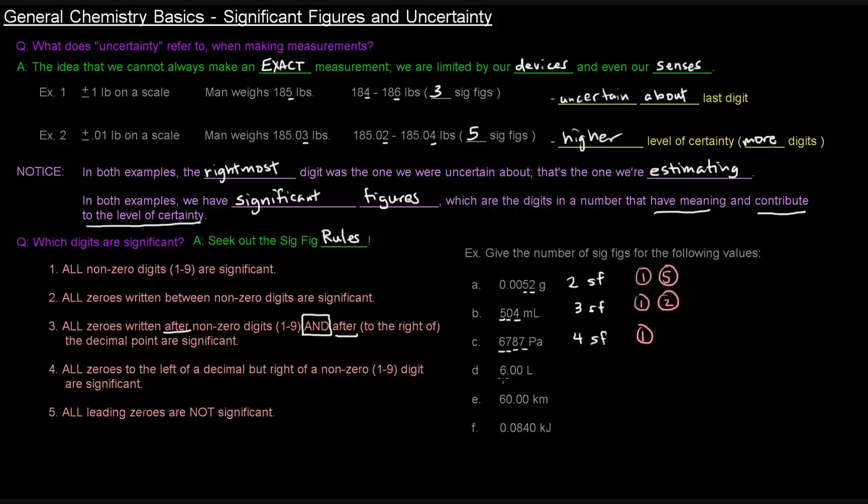D, 6.006. Definitely a sig fig. Now zeros between non-zero digits, these zeros are not between non-zero digits, they're only to the right. So rule number two doesn't apply. All zeros written after non-zero digits and after decimal points. So these zeros here are after the six and simultaneously after the decimal point, so they are carrying meaning and they are significant. So that's three significant figures. So that's rules one and three.